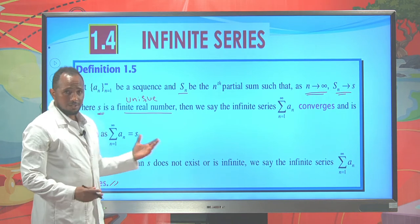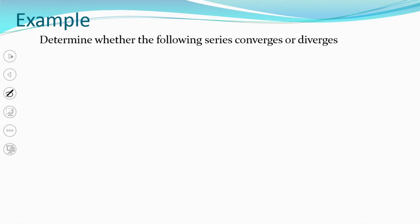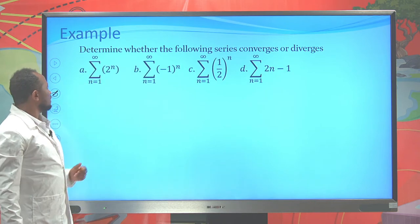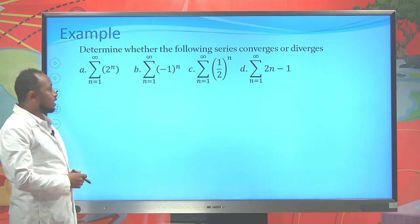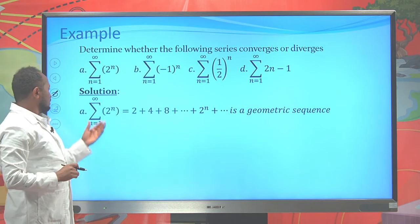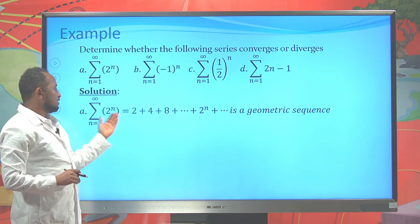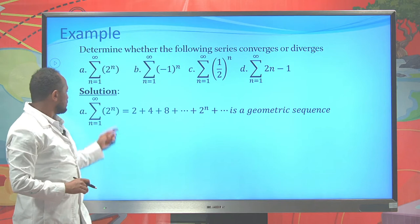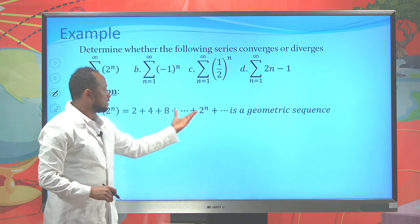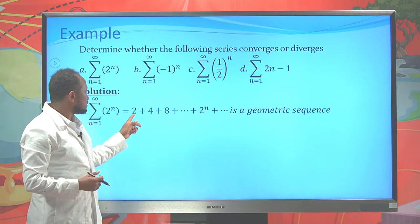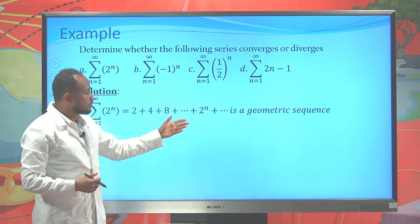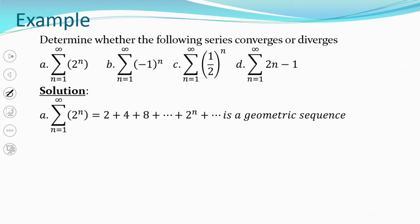Now let's see an example. Determine whether the following series converges or diverges. The sum of 2^n where n starts from 1 up to infinity. Written out, this is 2 + 4 + 8 + ... It is a geometric sequence with first term 2 and common ratio 2, since 4/2 = 2, 8/4 = 2, and so on.